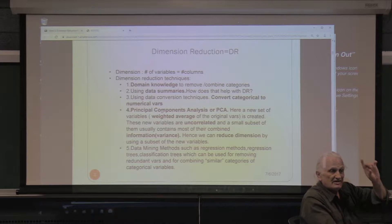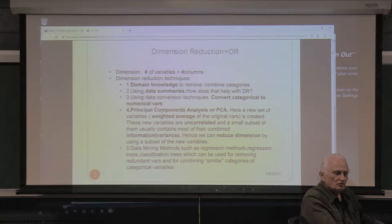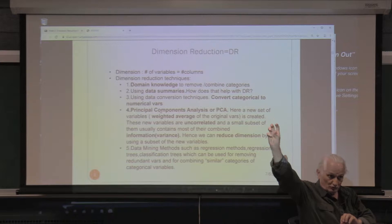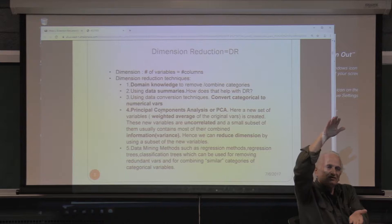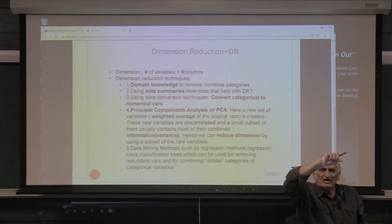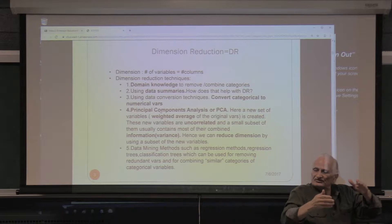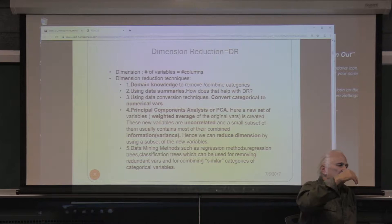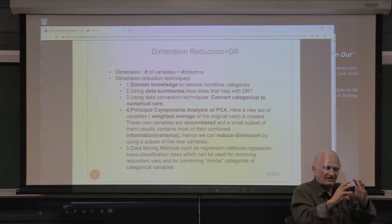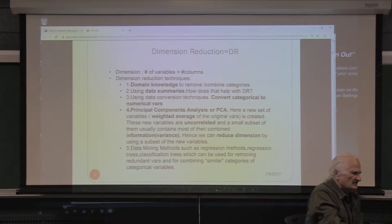We will talk specifically about PCA next Tuesday. Today I'll talk about other things you can do to reduce dimensionality. When you have a histogram, a histogram may represent 10 billion records — you have reduced the problem to a histogram. Anything that reduces rows through a summary also works: you can have a summary record that summarizes 10,000 records. In general, whenever we reduce the problem — by reducing the number of rows, the number of columns, or using a graph representing data — that is called dimension reduction.